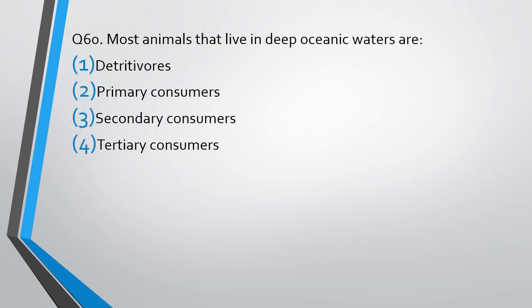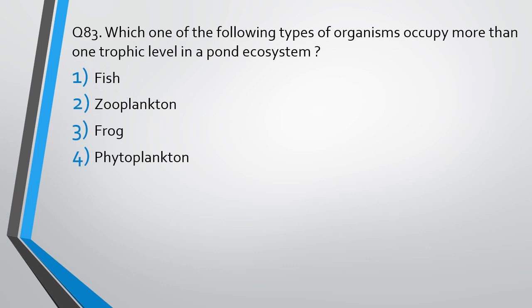Question number 60. Most animals that live in deep oceanic waters are: detritivores, primary consumers, secondary consumers, or tertiary consumers. The correct answer is option 1 — detritivores. Next question: which one of the following types of organisms occupies more than one trophic level in a pond ecosystem — fish, zooplanktons, frog, or phytoplanktons? The correct answer is option 1 — fish occupies more than one trophic level in a pond ecosystem.